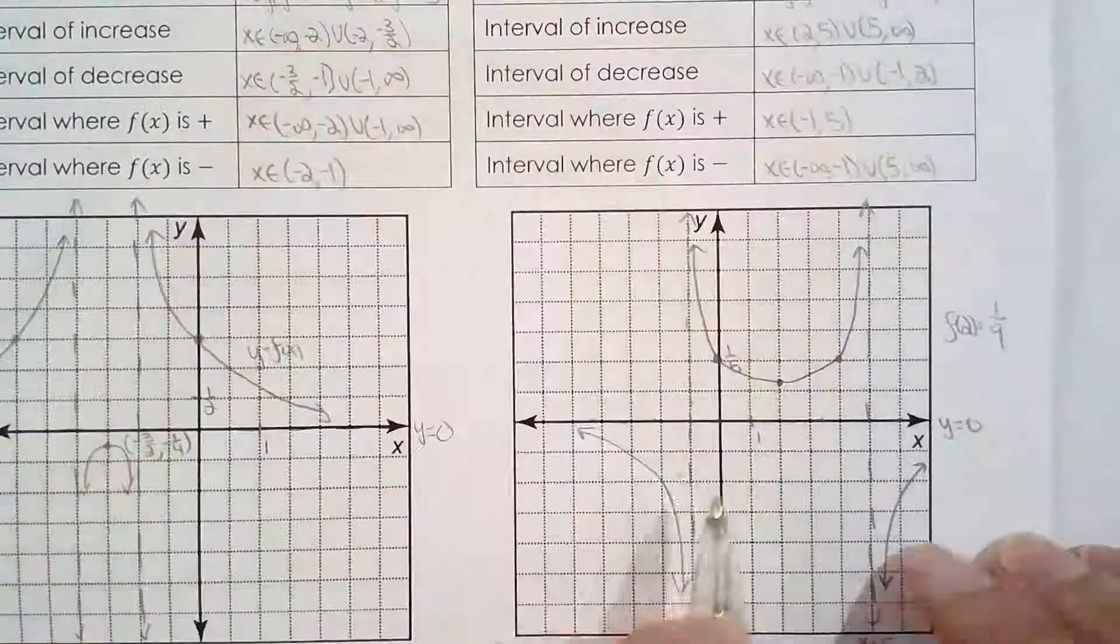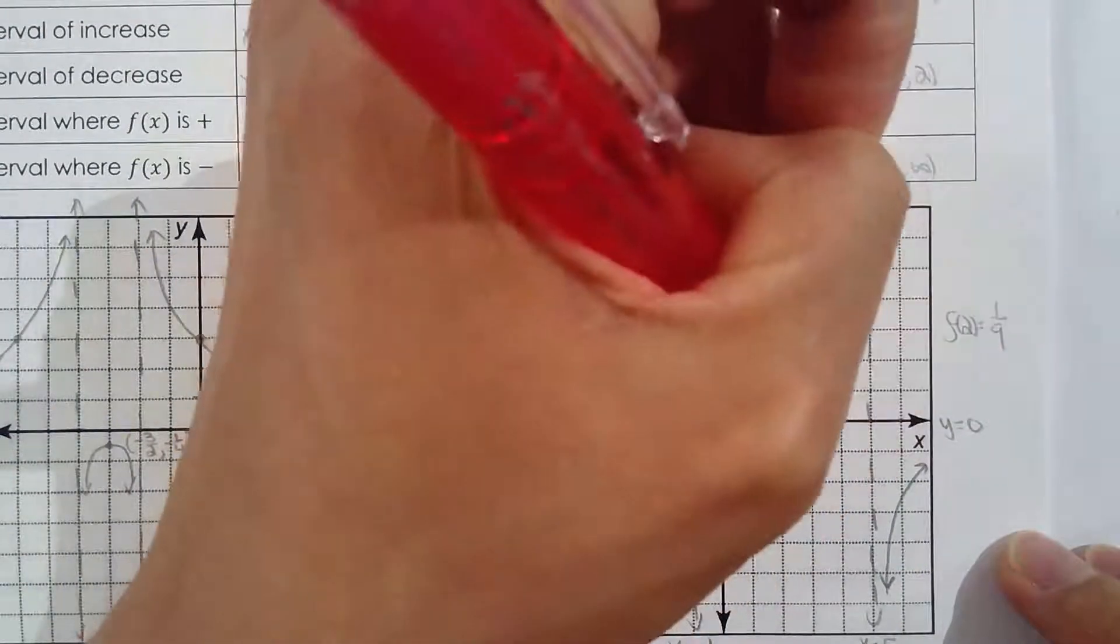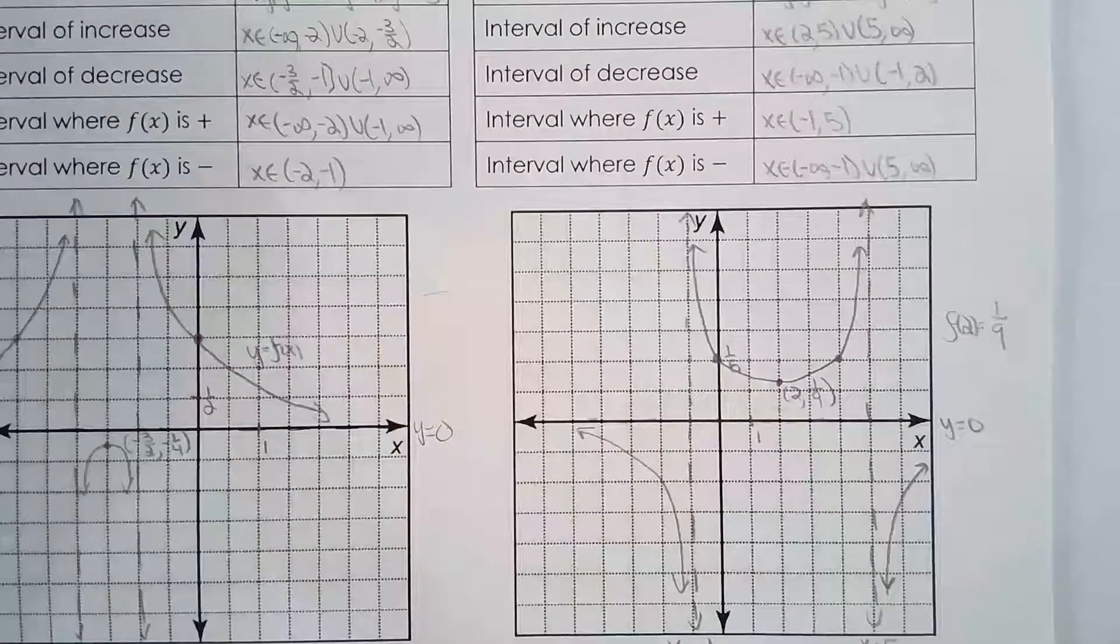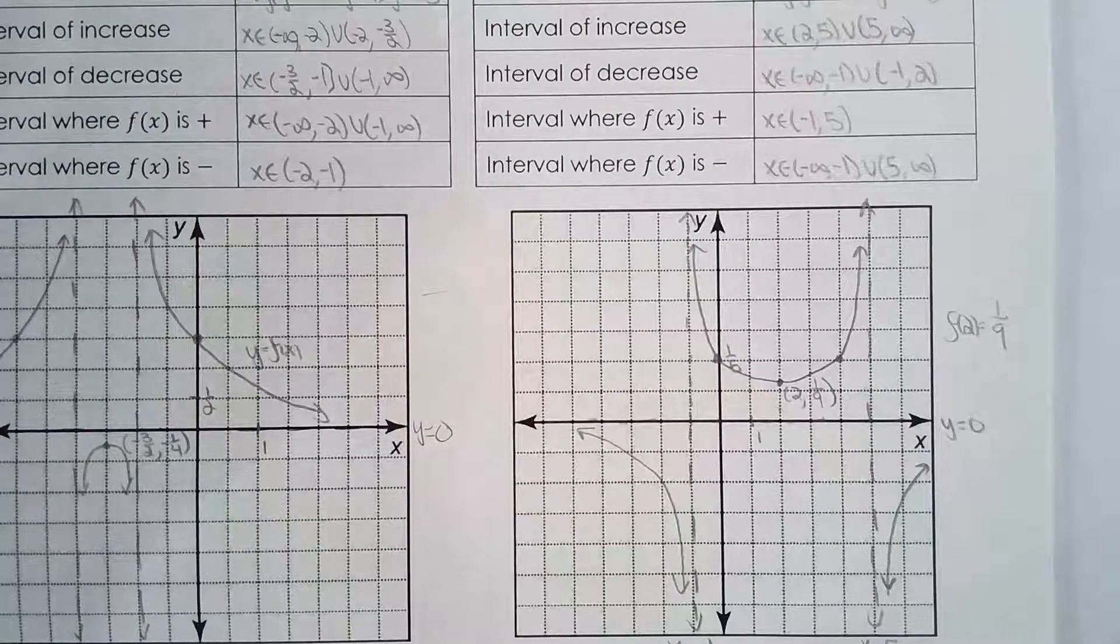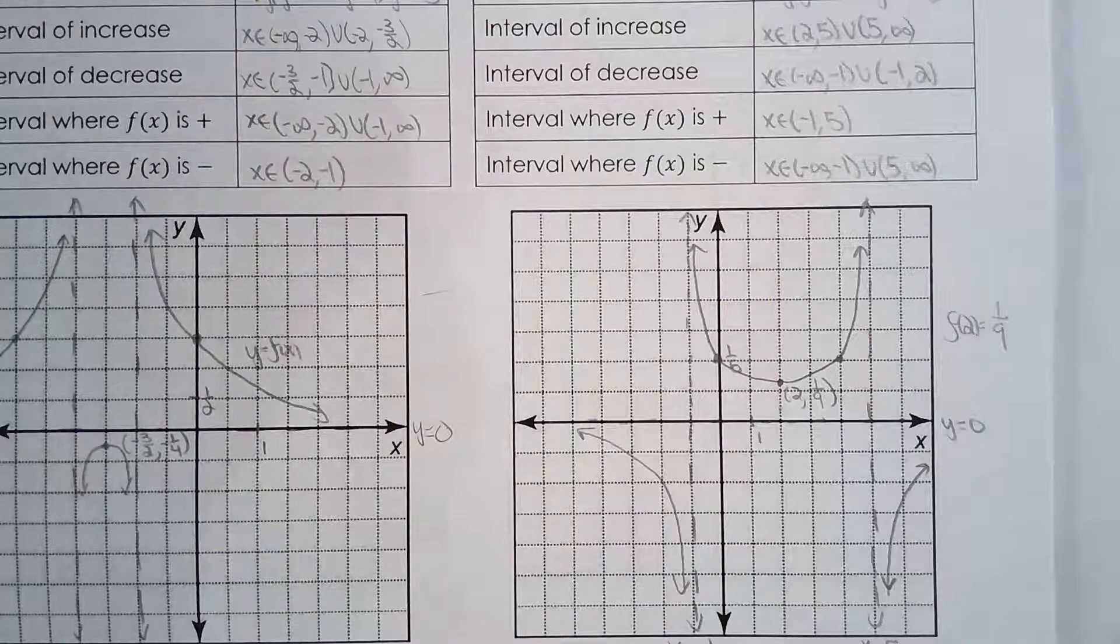This one over here, halfway between negative one and five is two, and I did the math. When x is two, the rational function is equal to one over nine, so f of two is one over nine, which means the local min point is two, one over nine.